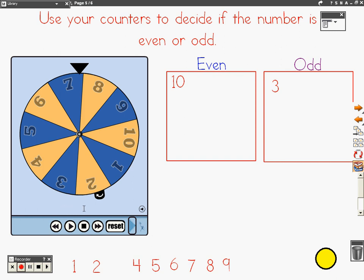Try the number seven. Get out seven counters and pair them up. Does each one have a partner? No. So the number is odd.